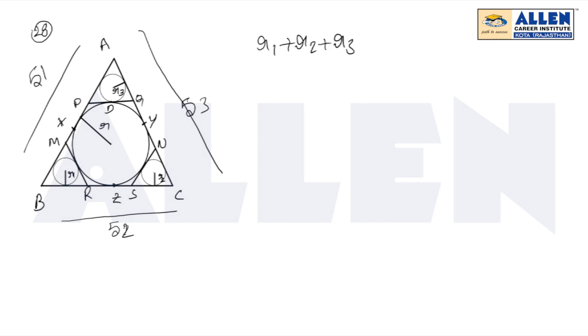This is a tricky question. We need to find R1 plus R2 plus R3 near to the integer. The given sides are AB equals 51, BC equals 52, and AC equals 53.